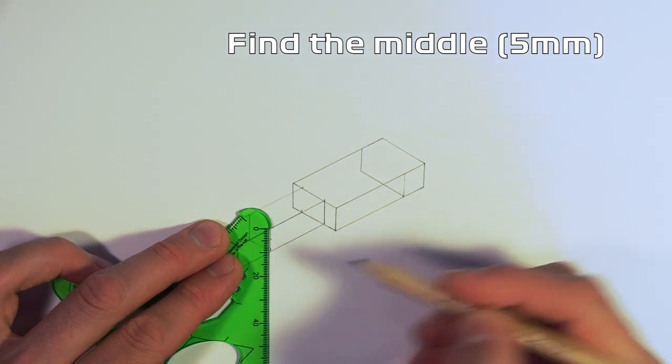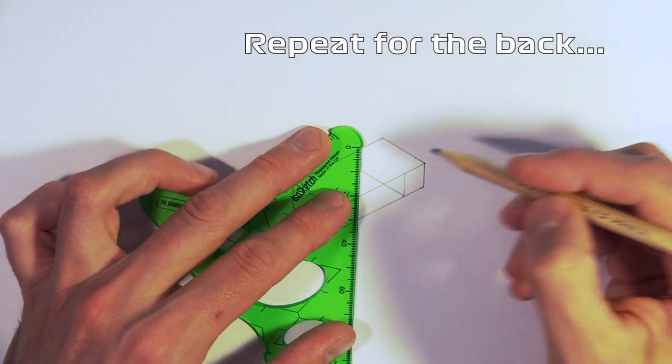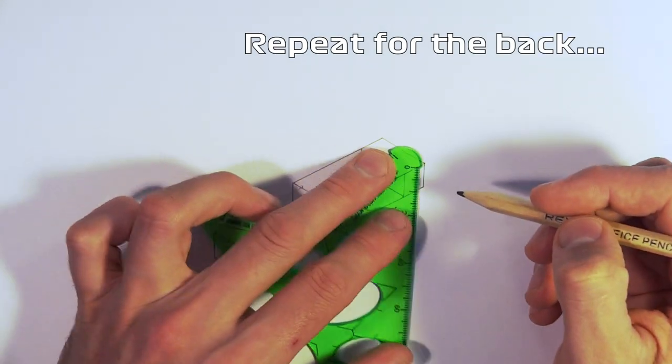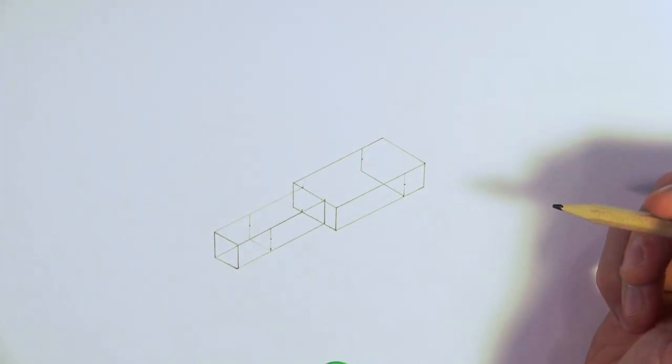Find the middle of this line, so that's going to be a 5 millimeter dot, and find the middle of the second line. Repeat this at the back, and this is where our axle holes are going to go through our chassis. We're finding the middle of all four lines.